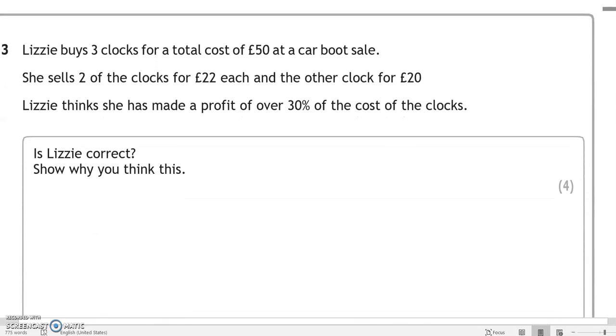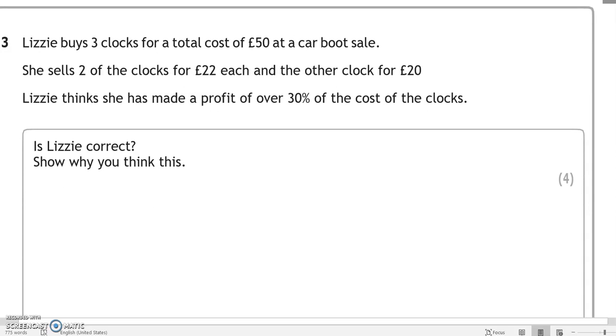Looking at question number 3. Lizzie buys 3 clocks for a total cost of £50 at a car boot sale. She sells 2 of the clocks for £22 each, and the other clock for £20. Lizzie thinks she has made a profit of over 30% of the cost of the clocks. Is Lizzie correct? Show why you think this. So we know she bought them all for £50. And then she sold them all for £22 and £22 and £20, which is £64.